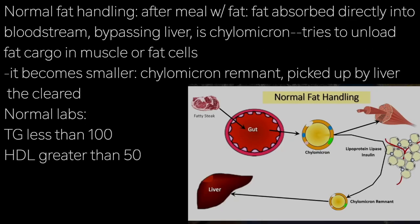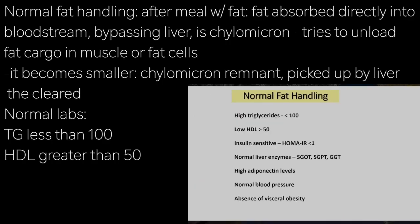If you look at normal fat handling after a fat meal, the fat gets absorbed into the circulation directly — it bypasses the liver. It's called a chylomicron, a fat-filled globule that tries to find a place to unload its cargo in the muscle or in the fat cell. It becomes much smaller, called a remnant, and is picked up by the liver and then cleared. By looking at clinical parameters of low triglycerides and high HDL, I can say that somebody has normal fat handling.